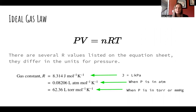All of the other gas laws are derived from this gas law, where P is pressure, V is volume, N is number of moles, R is the gas law constant, and T is the temperature in Kelvin. On your equations and constants sheet, you have several different R values listed — they differ based on which units are being used for pressure. All of them expect volume in liters and T in Kelvin.